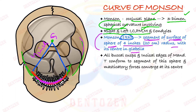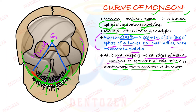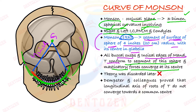All the buccal cusps and incisal edges of mandibular teeth are on this segment — they conform to the segment of this sphere — and all masticatory forces converge at the center of the sphere. That is why the teeth are arranged like that. However, this theory was later discarded because Dempster and colleagues proved that the longitudinal axes of the teeth are not converging towards a common center but are in different directions.